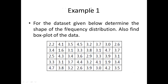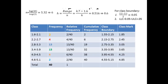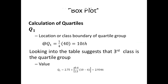Let's move on to Example 1. We are given a data set for which we must determine the shape of the frequency distribution and the box plot. We'll start with the box plot, but first let's summarize the data in the form of a class interval table. This example was done previously, so we are reproducing it here. This is our data set in terms of the class interval table, and now we will find the box plot and measures of shapes.